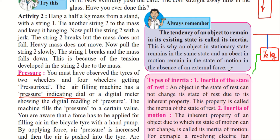For example, if you take a piece of paper and keep it on the table, it will remain there unless an external force is applied — such as if you pick it up. Or if you take a ball and throw it on the table, it will continue to keep moving until an external force is applied, like stopping it with your hand or a frictional force acting on it.